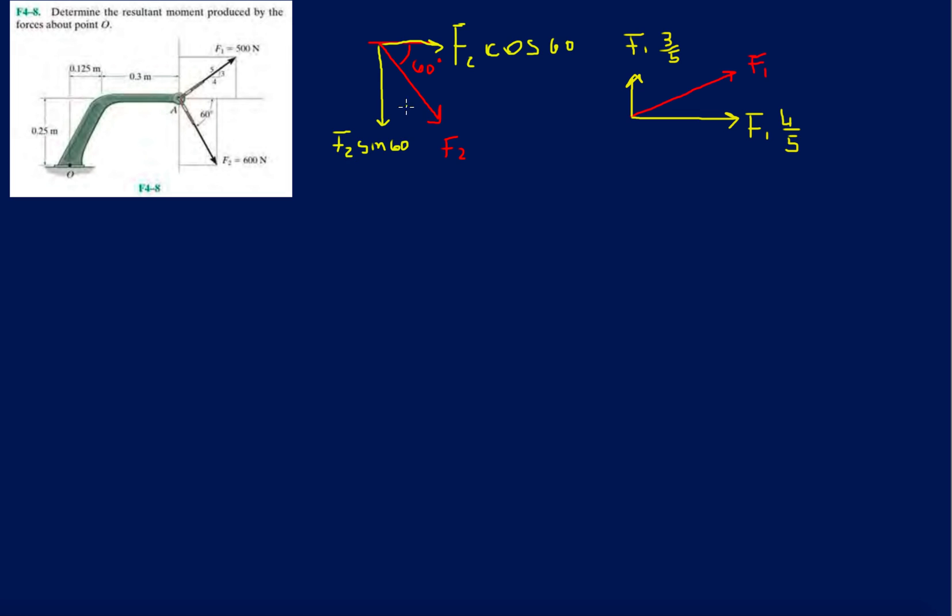Perfect. So we know that the force components are broken down into x and y. Now we want to find the distances that we must multiply the forces with in order to get the line of action to intersect 0,0.